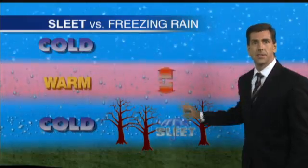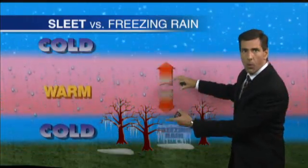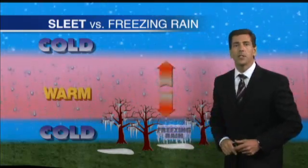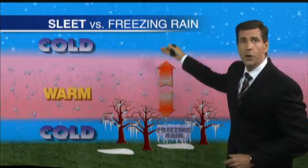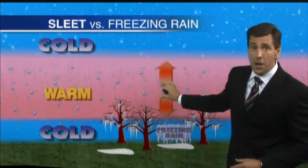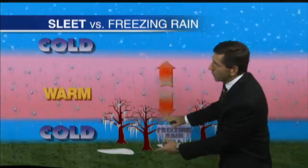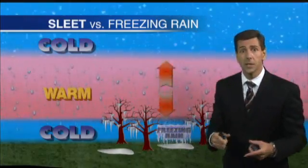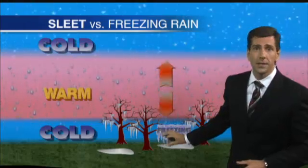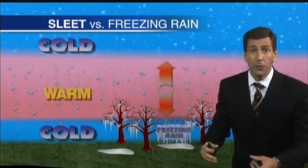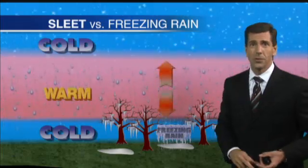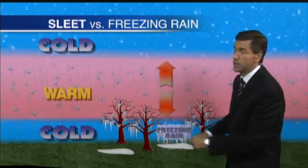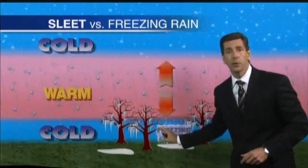Freezing rain happens in a similar scenario, except the warm layer is much, much deeper, leaving only a very shallow layer of sub-freezing air near the ground. So snow falls into the warm layer, melts into rain, but because the cold layer is so shallow, that rain does not have enough time to refreeze into ice pellets or sleet. Instead, it freezes on surfaces that are below freezing — trees, roads, sidewalks — things like that will glaze over. It's pure rain that happens to fall on sub-freezing surfaces, and that is freezing rain.